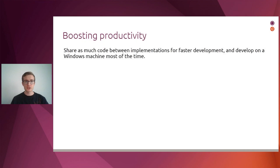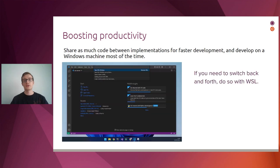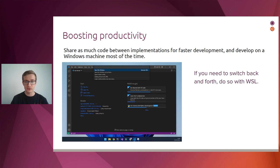So given these challenges, how can developers boost their productivity? The first approach is to share as much code as possible between the Windows and Linux implementations, and to develop mostly on a Windows machine. However, when you need to switch back to Linux — for MPI-specific work or to test on both platforms — you can very quickly switch using WSL, either with the console, VS Code, or whichever tool you prefer.